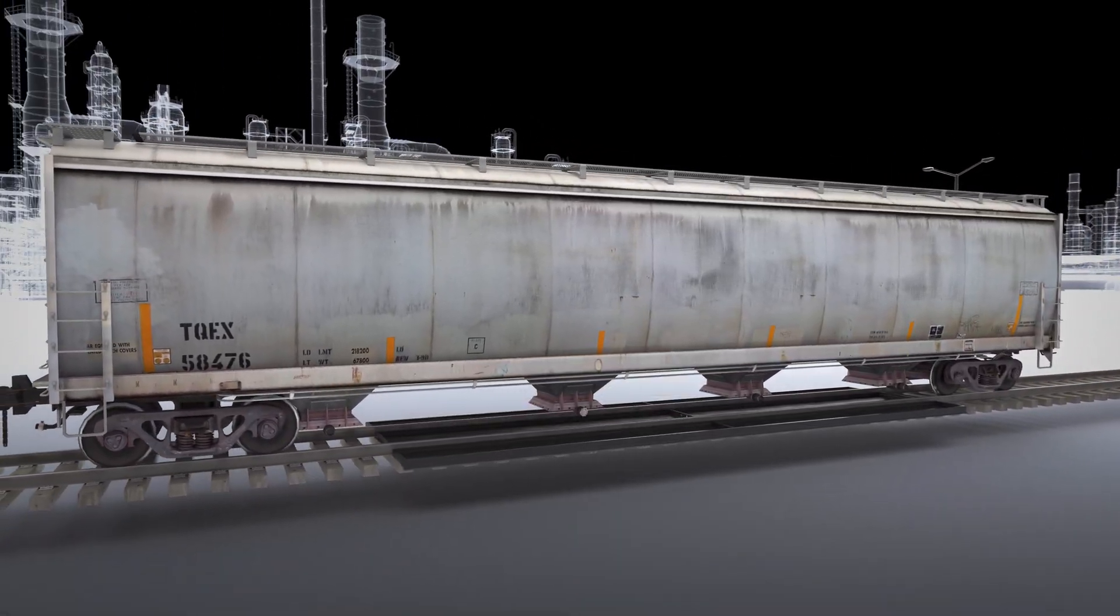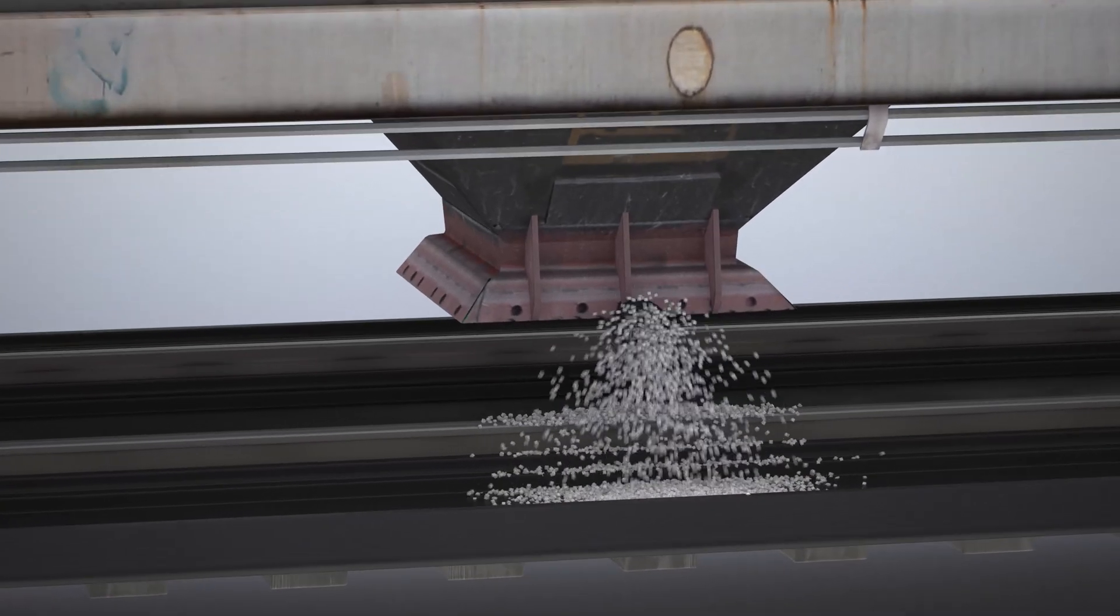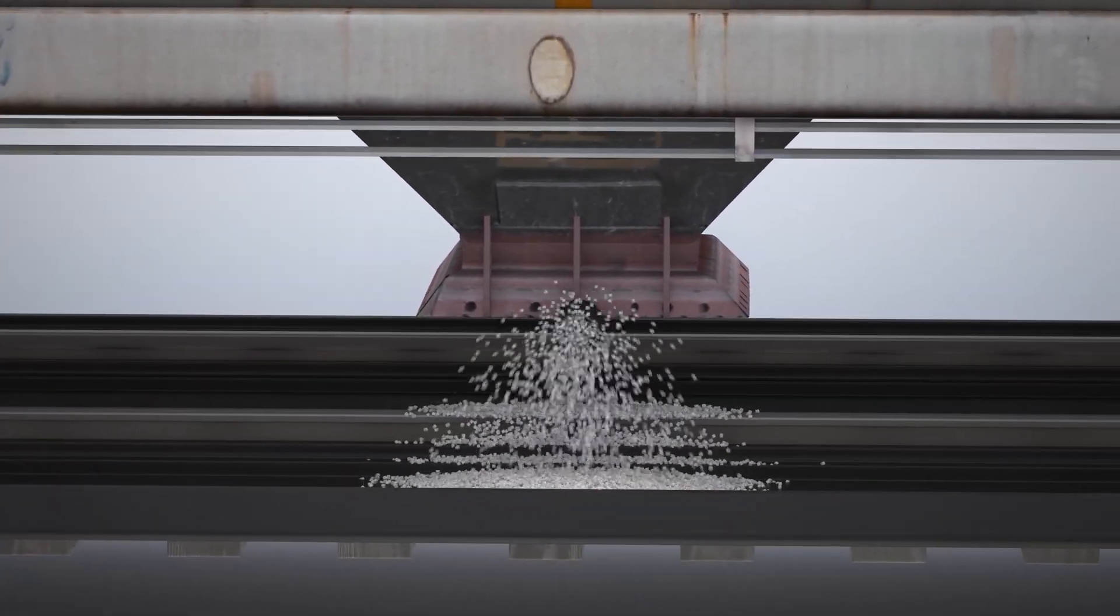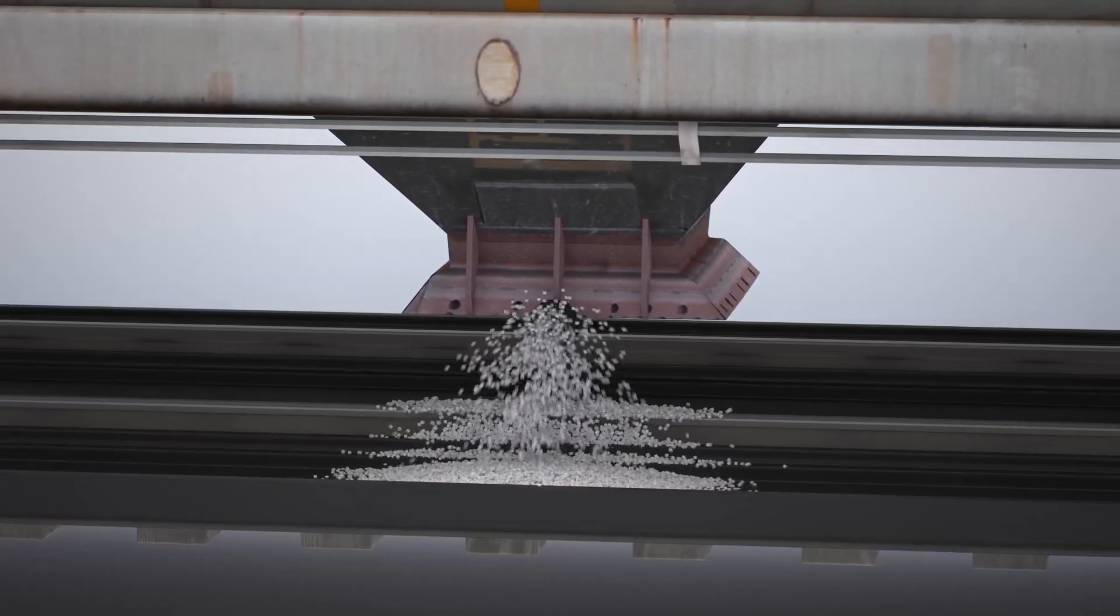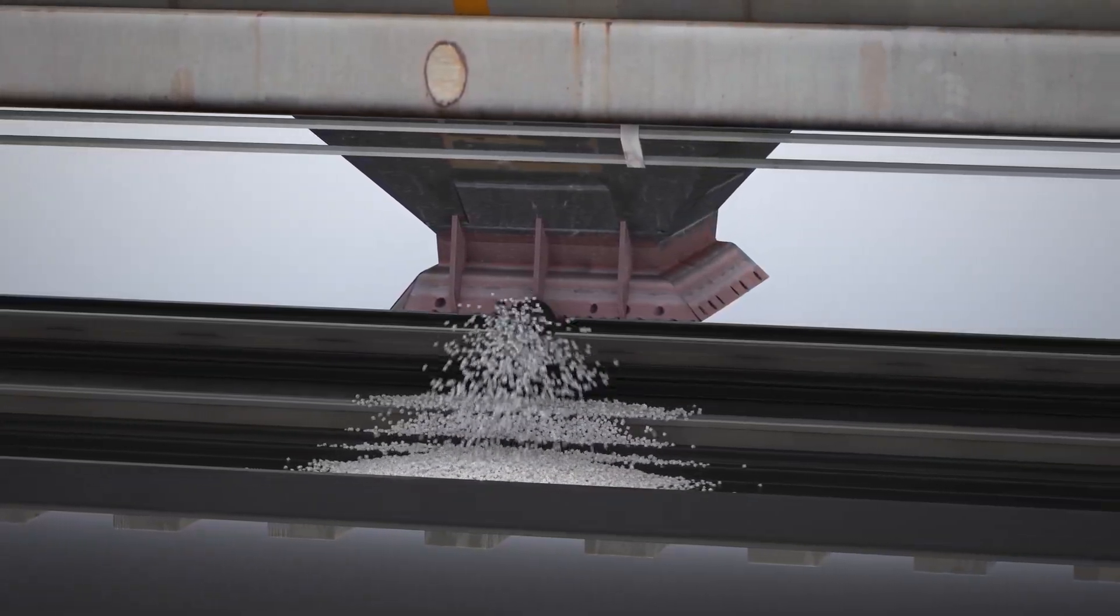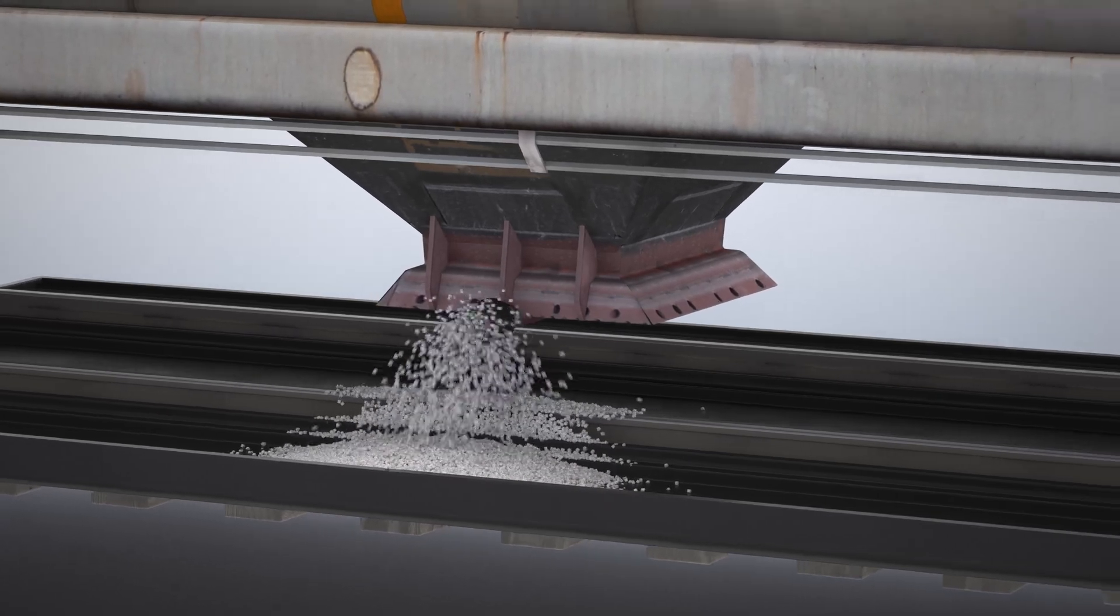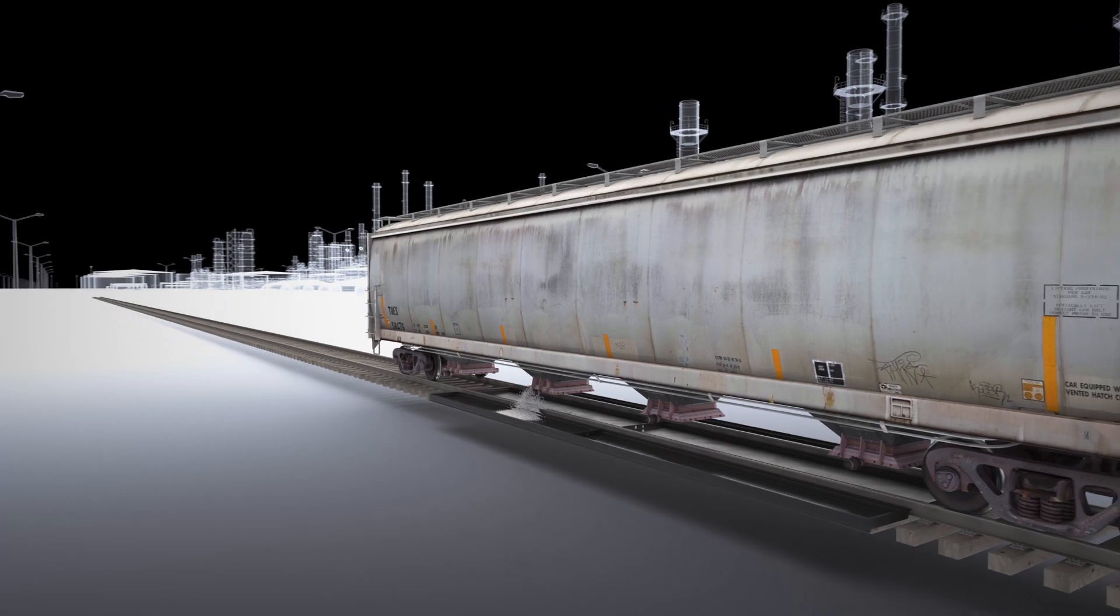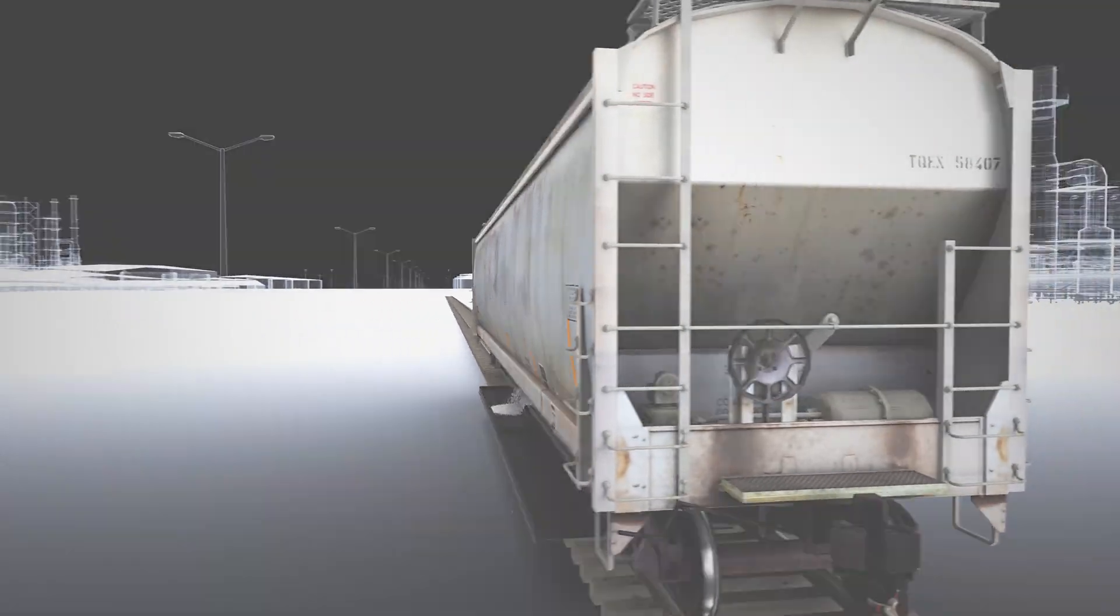When pellets are loaded or unloaded from rail cars, any spillage is captured in the pans and prevented from getting into the environment. Using these modified track pans, or pellet pans as we like to call them, can greatly help in achieving the zero pellet loss goal of programs like Operation Clean Sweep and others like it.